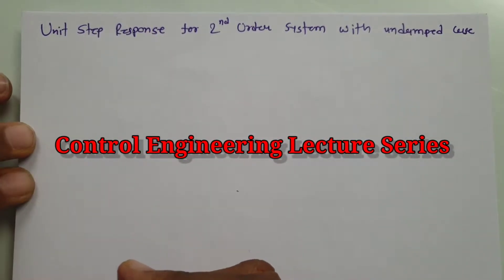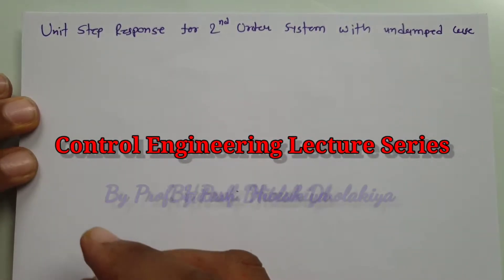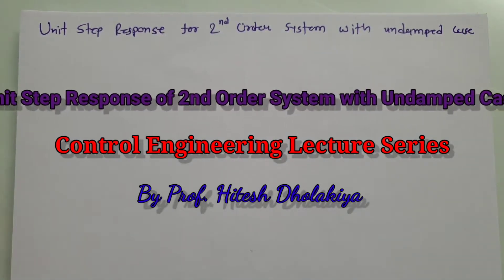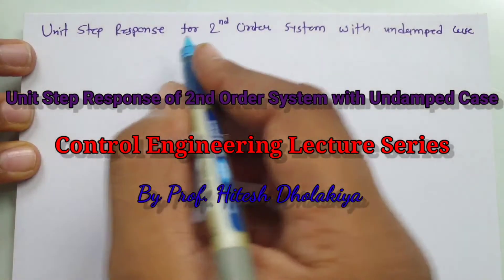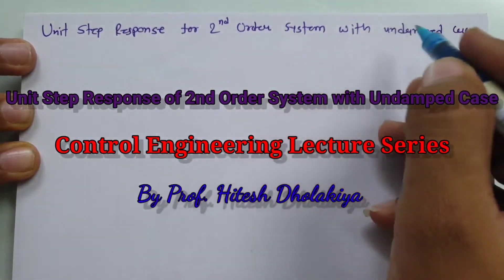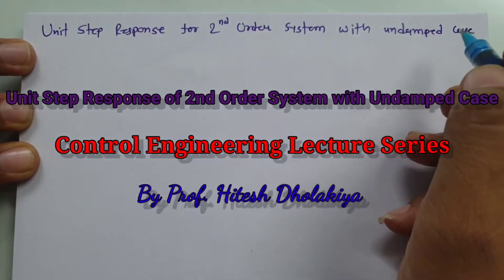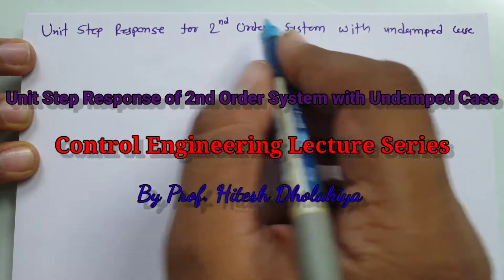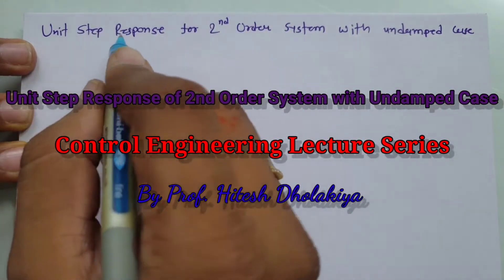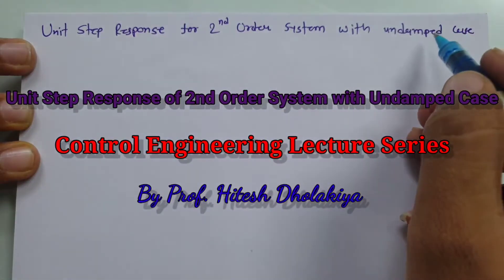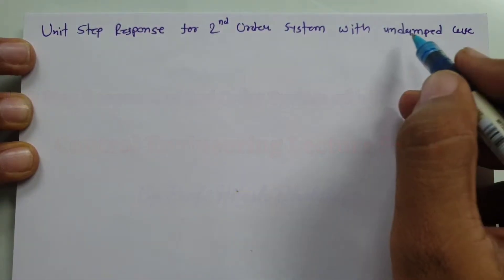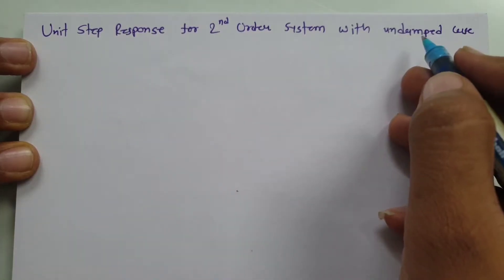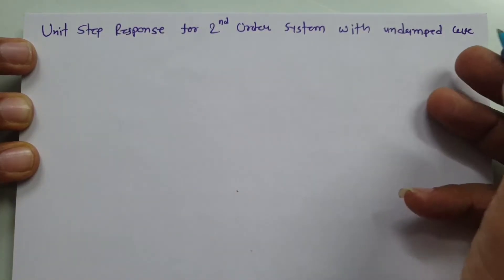Welcome to the control engineering playlist. Professor Itesh Dolakya is going to explain the unit step response of a second order system with the undamped case in this video, where our system will be second order, input will be unit step, and undamped case means zeta is equals to zero — meaning the damping factor is equals to zero.